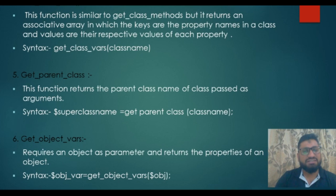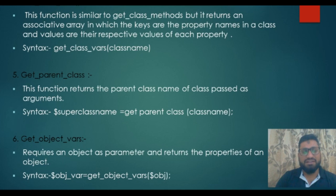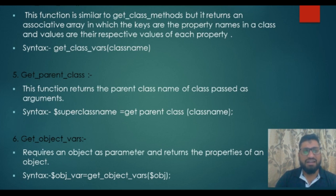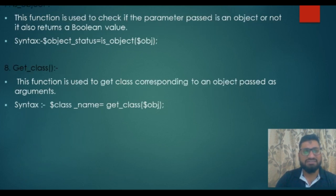The next function is get_object_vars. It requires an object as a parameter and returns the properties of that object. The syntax is: $object_vars = get_object_vars($object).